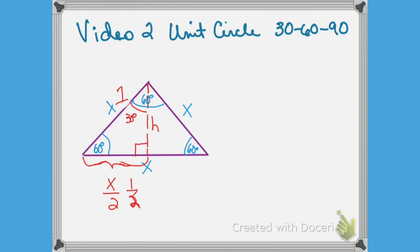So I'm going to use the Pythagorean theorem and say that h squared plus 1 half squared is equal to 1 squared.